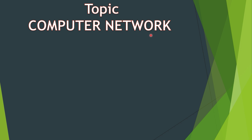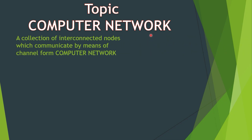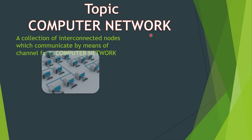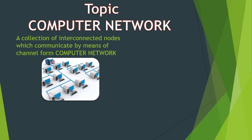Our first topic is computer network. A computer network is a collection of computers connected together for the purpose of sharing resources and communication. A node is a system or device that is connected to a computer network — every electronic device in a network can be called a node.